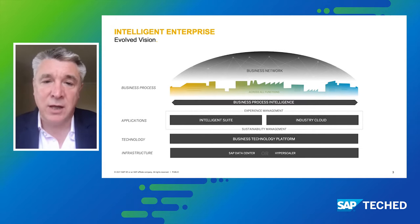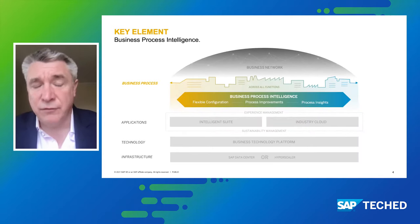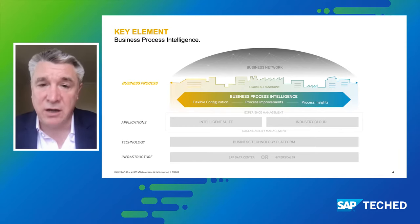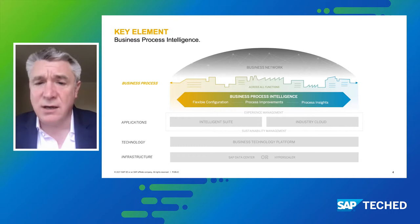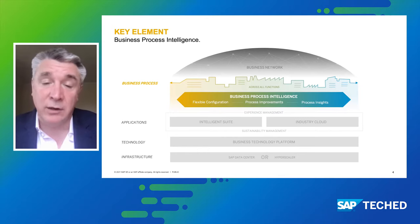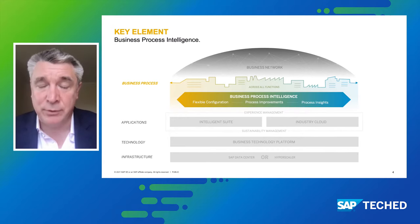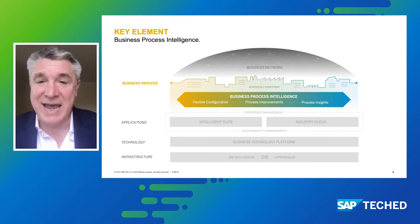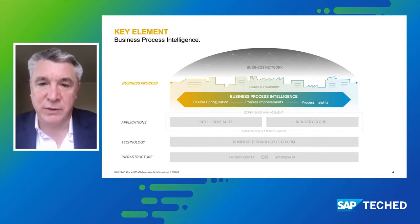What I want to do now is drill in one stage further and look at business process intelligence. There are two sides to the coin: the first is business process insights, leveraging the Signavio portfolio to mine and understand process improvement opportunities across the portfolio, whether that's S4 or different line of business applications. But insight without action is of no value, and this is where we bring to bear the power of the extension suite and our process automation portfolio — taking it from insight to action.